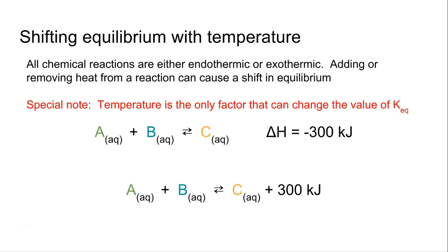If I removed heat from this situation, then you have a lack of heat on the product side. It's going to shift to the right to make more products. So that would be a decrease in A and B and an increase in C.